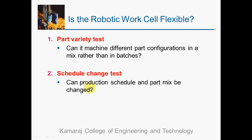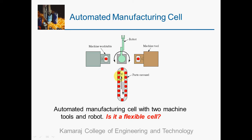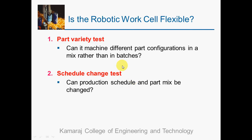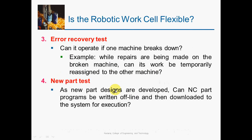The schedule change test is also possible here. In reality there will always be changes in the production schedule — changes in due dates or requirements for large numbers of parts. With two CNC machines and an automated robotic material handling system, we can easily accommodate changes in production schedule, so the second test is satisfied. The error recovery test is also possible in this robotic workflow.